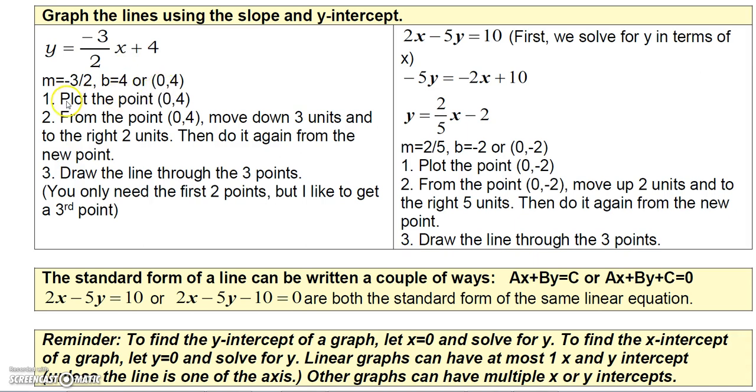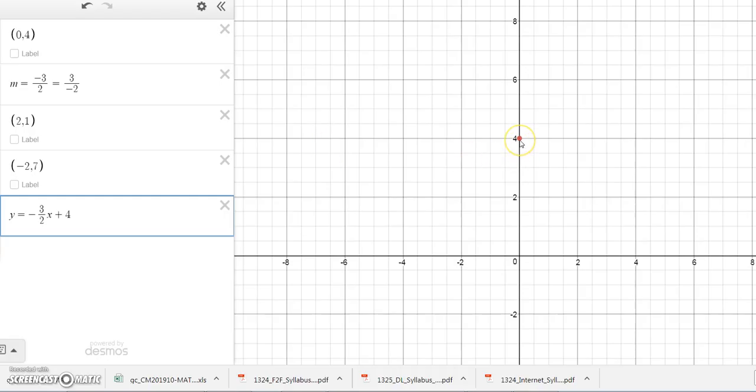We also know that the constant 4 is the y-intercept, so the first thing you should do is plot the point of the y-intercept. If you'll notice here, I first plotted the point (0, 4).